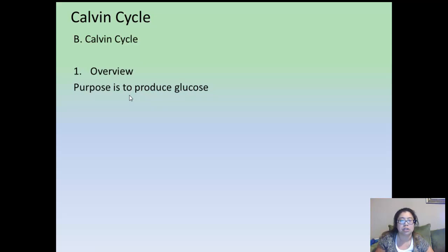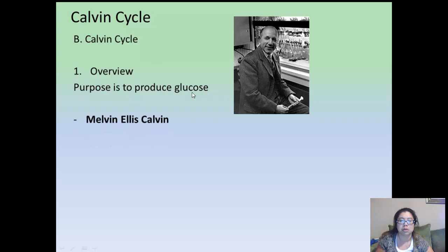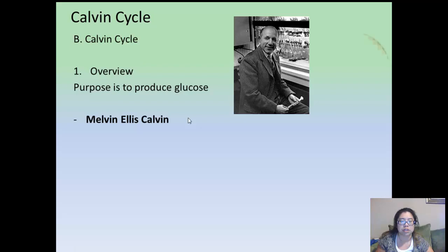Remember the first part is the light-dependent reaction. So why is it called the Calvin Cycle? It's because of Melvin Ellis Calvin, a chemist at the University of California, Berkeley. For his work in discovering the Calvin Cycle, he was awarded the Nobel Prize, a very prestigious prize, in 1961.